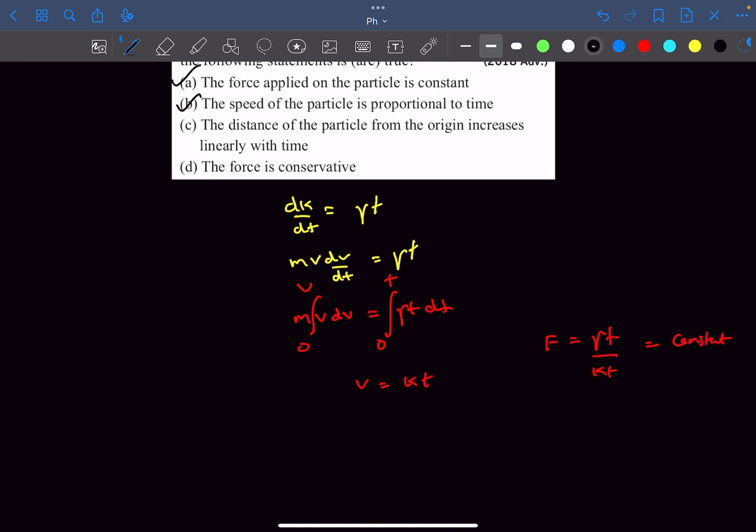Now in option C they are asking about the distance. The distance of the particle from the origin increases linearly with time. This would be wrong because we can clearly see the velocity is linearly varying with time. If you write the velocity as ds/dt you can clearly see it is varying parabolically with time. So option C will be wrong.